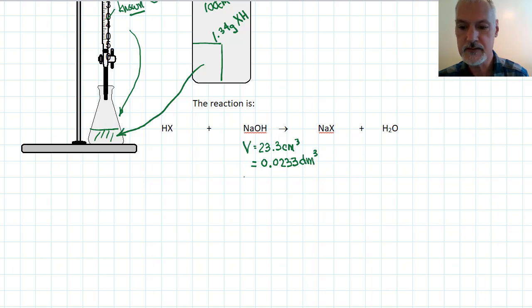The concentration of this solution is 0.100 moles per decimeter cubed. From that information, we can determine the number of moles from concentration times volume, just multiplying these two quantities together. That gets me 0.00233 moles.